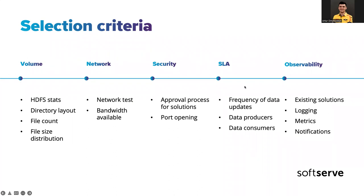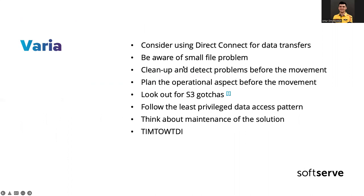Different criteria affect different decisions. For us, there was a big impediment on the security side — it was a project for a bank. Even AWS services had to be whitelisted, meaning they had to pass security checks and specific criteria the bank had. It took about two months to whitelist the DataSync service. So that's a really long process sometimes, and it can have a lot of effect on your decisions.